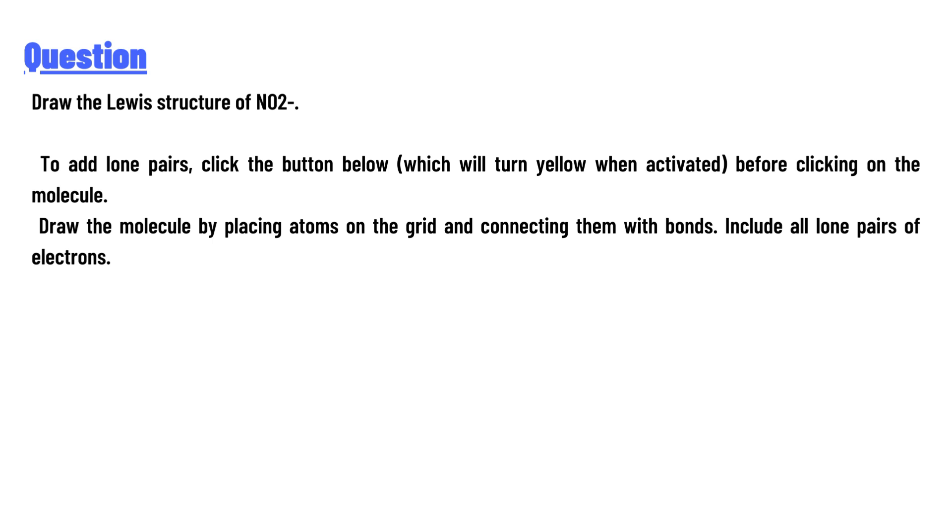Draw the Lewis structure of NO2-. To add lone pairs, click the button below, which will turn yellow when activated, before clicking on the molecule. Draw the molecule by placing atoms on the grid and connecting them with bonds. Include all lone pairs of electrons.